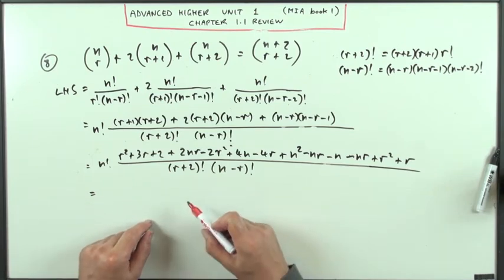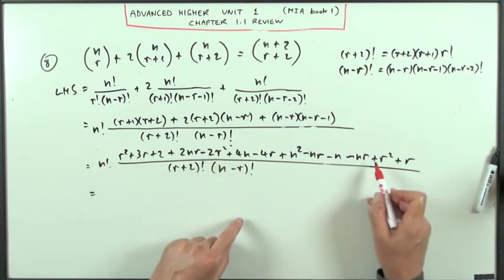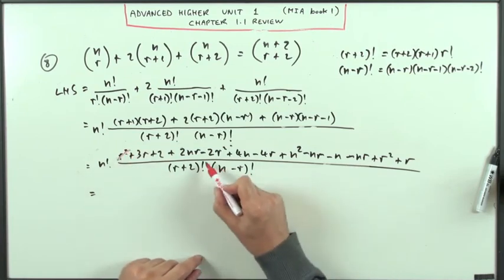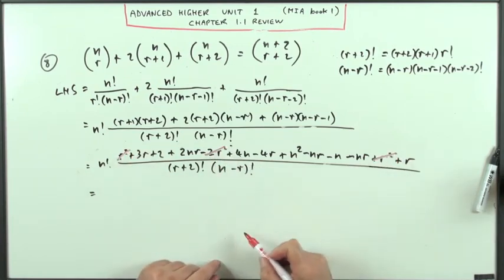r's first of all, what we do. r squared, I've got r squared, a minus two r squared, and r squared there, they'll go. r squared minus two r squared, r squared, that's gone.